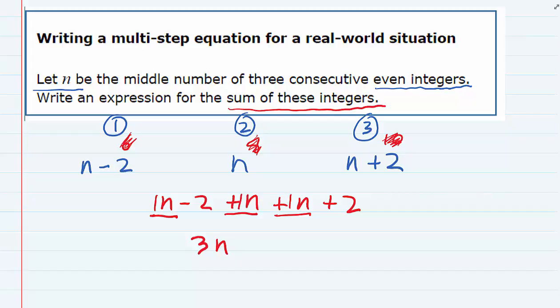If we look at the other numbers, which are also like terms, we have a minus 2 and a plus 2. If we add those together, they'll cancel and become 0. Our expression simplifies to just 3 times n.